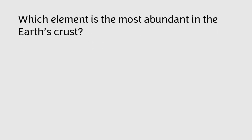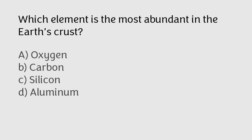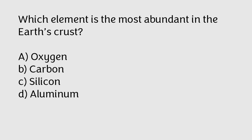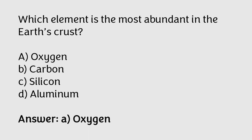Which element is the most abundant in the Earth's crust: oxygen, carbon, silicon, or aluminum? The correct answer is option A — oxygen is the most abundant element in the Earth's crust.